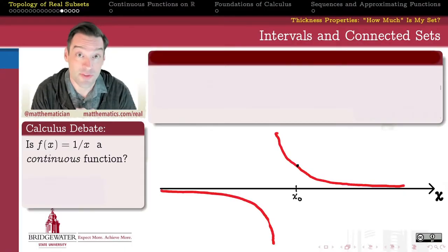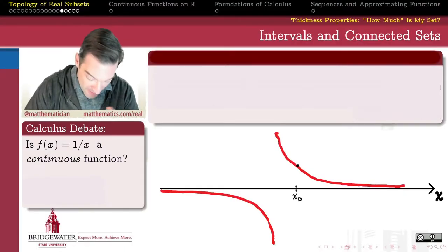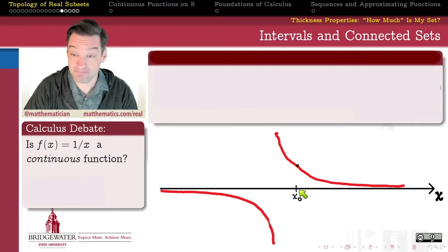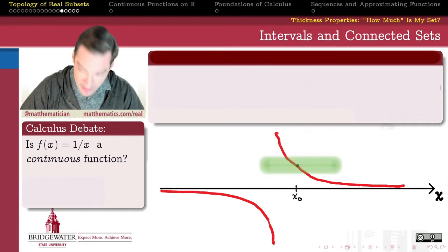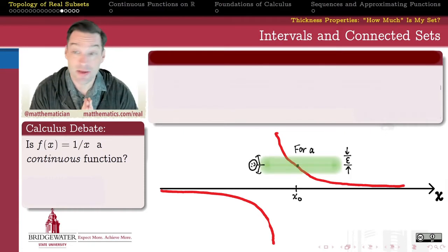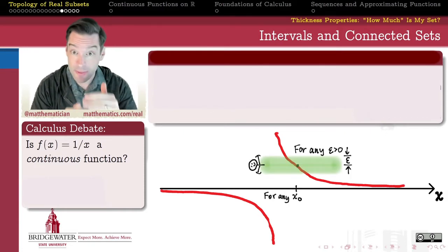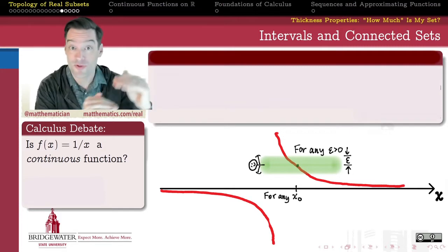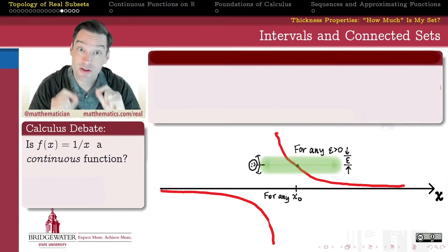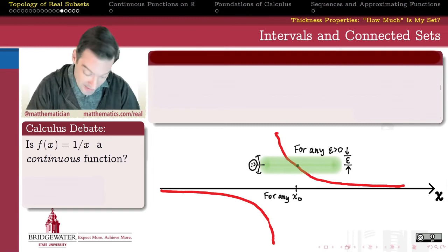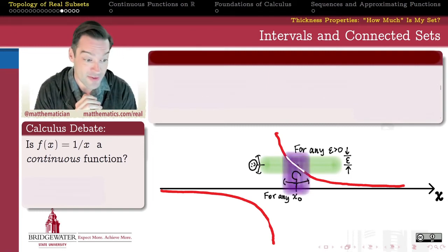So is the reciprocal a continuous function? Well, if I pick a point in the domain, an x-naught scenario, I just pick any non-zero real number. If you give me an epsilon, if you give me a certain width of a strip in the horizontal direction, and you tell me you need to get this close to the output value 1 over x-naught, by getting delta close to the value of x-naught in the domain, I can always do that.